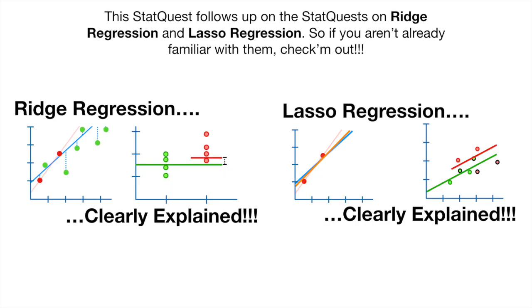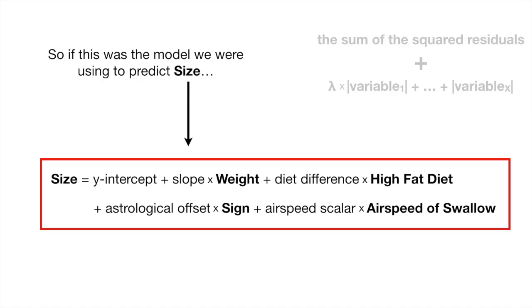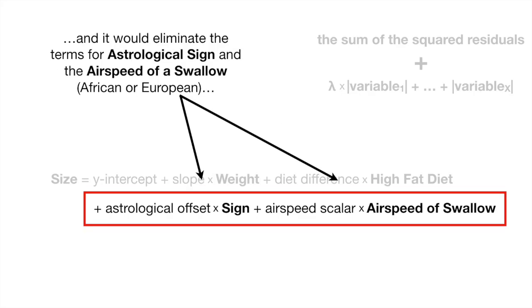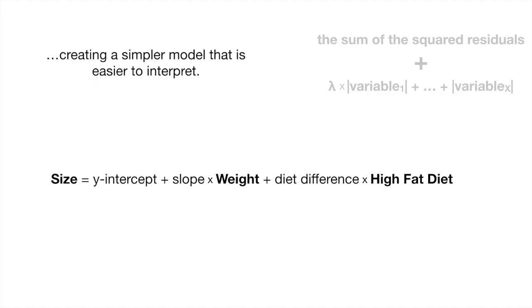This StatQuest follows up on the StatQuests on Ridge Regression and Lasso Regression, so if you aren't already familiar with them, check them out. We ended the StatQuest on Lasso Regression by saying that it works best when your model contains a lot of useless variables. So if this was the model we were using to predict size, then Lasso Regression would keep the terms for weight and high fat diet, and it would eliminate the terms for astrological sign and the airspeed of a swallow, creating a simpler model that is easier to interpret.